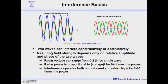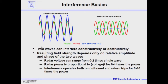Here we see wave one and wave two. We have them set up so that the phases start at exactly the same time — at the same phase — and they add constructively. What we get is twice the amplitude at the peaks and twice the amplitude at the valleys. These are called constructively interfering waves.